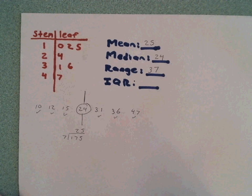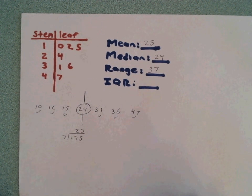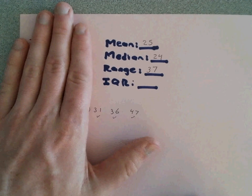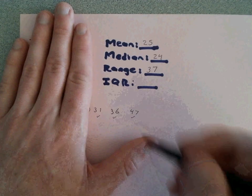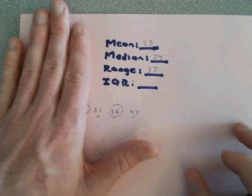The interquartile range is Q3, or the upper median, minus Q1, the lower median. So in order to find the upper median, we just have to look at the upper half of the data and find what number's in the center. If I have three numbers, this 36 is right in the center.